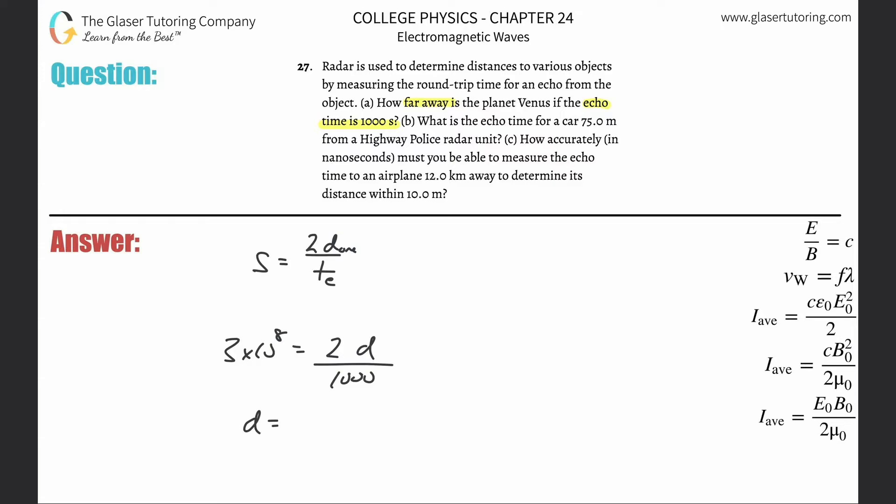So when you solve this for D, take out the calculator and it's going to be 3 times 10 to the 8, multiply them by 1,000 and then you're going to divide that by 2. So this is 1.5 times then 10 to the 11th meters. That is then the distance.